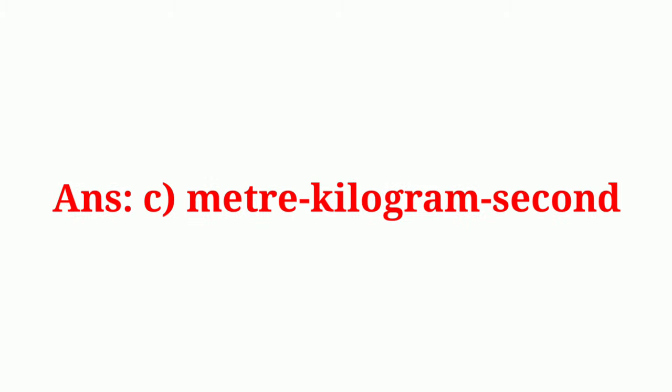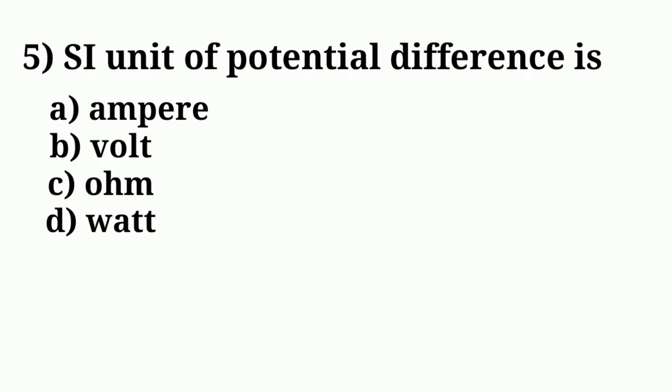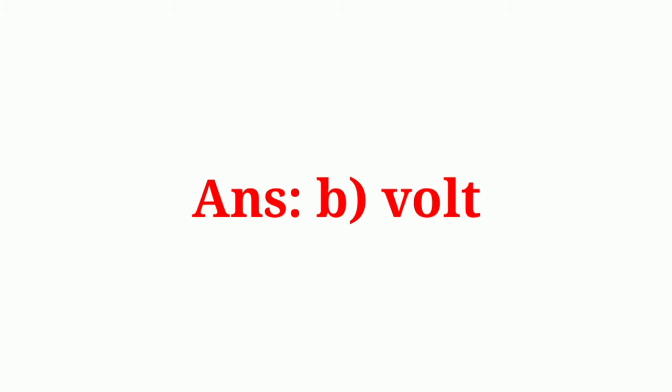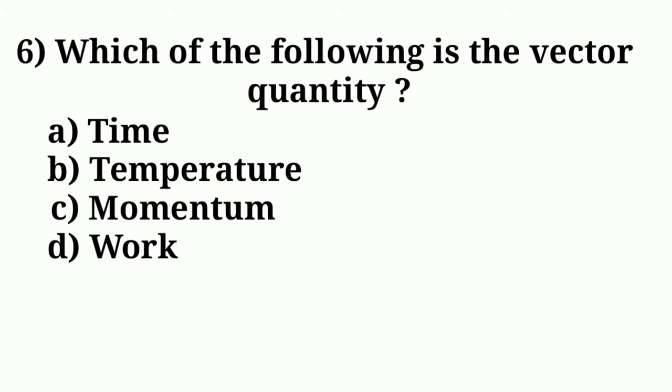Answer: option C, meter-kilogram-second. Question number five: SI unit of potential difference is? Answer: option B, volt. Question number six: Which of the following is a vector quantity?